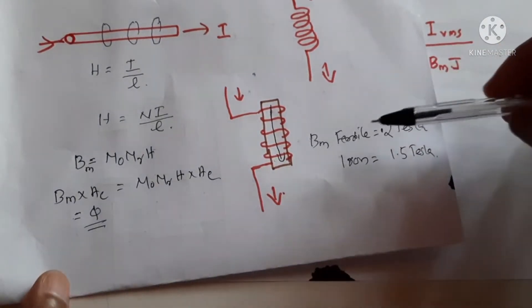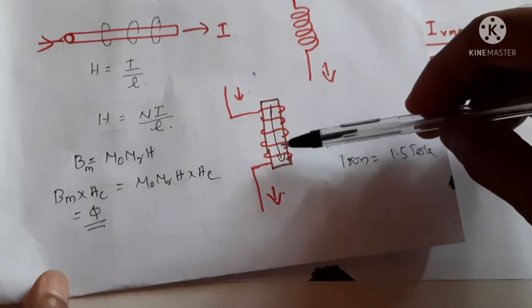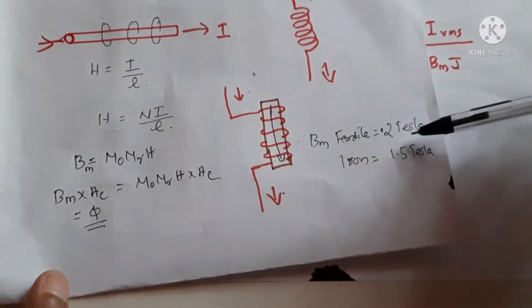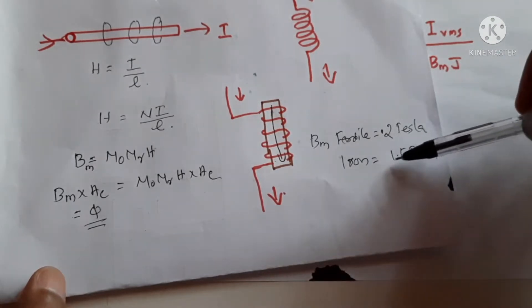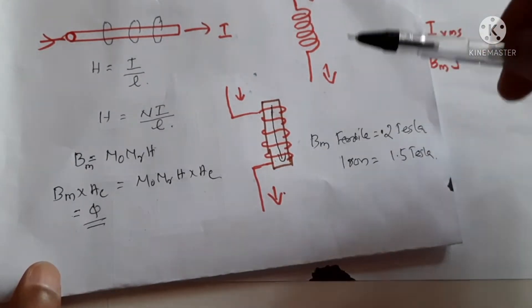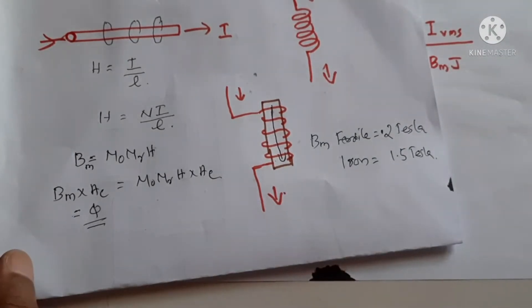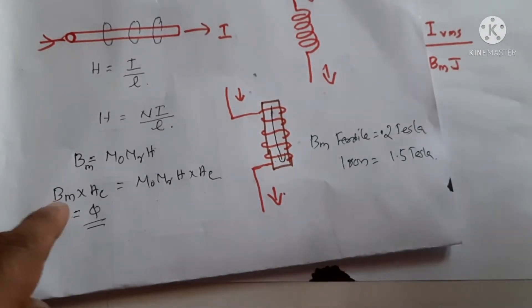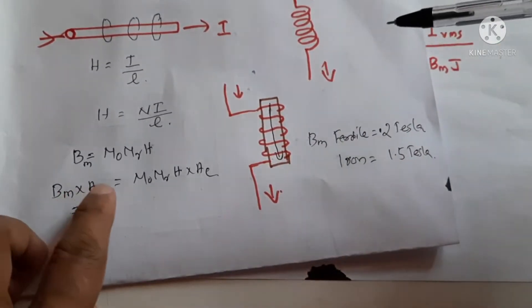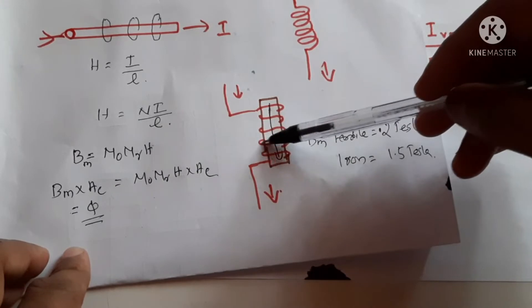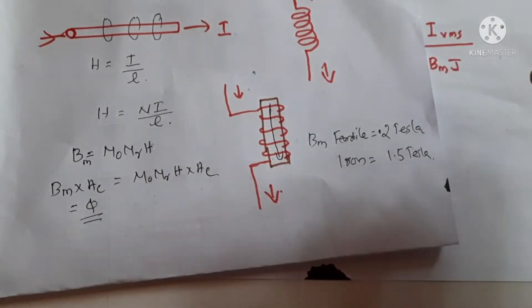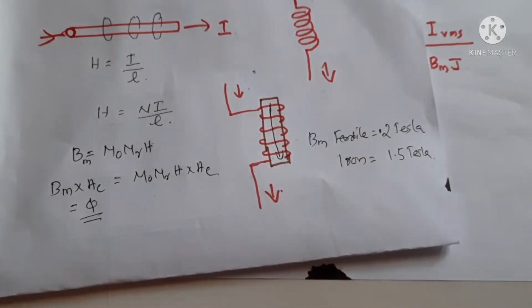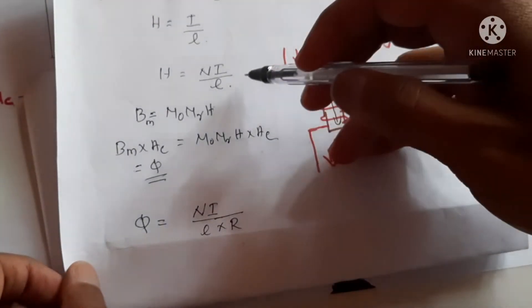Usually the maximum flux that a material can provide differs between materials. For ferrite it is around 0.2 tesla, and for iron it is more — around 1.5 tesla. So iron produces more flux than ferrite. If we multiply this flux density with the area, we get the total flux. If there is more area, the core can occupy more flux. Flux can also be defined in another way.